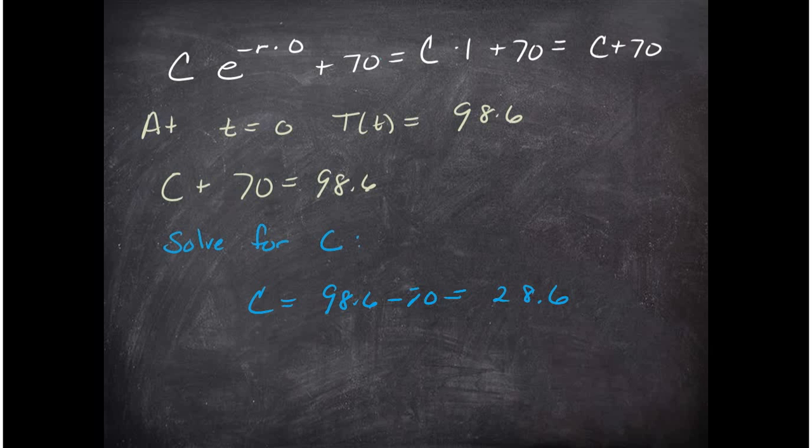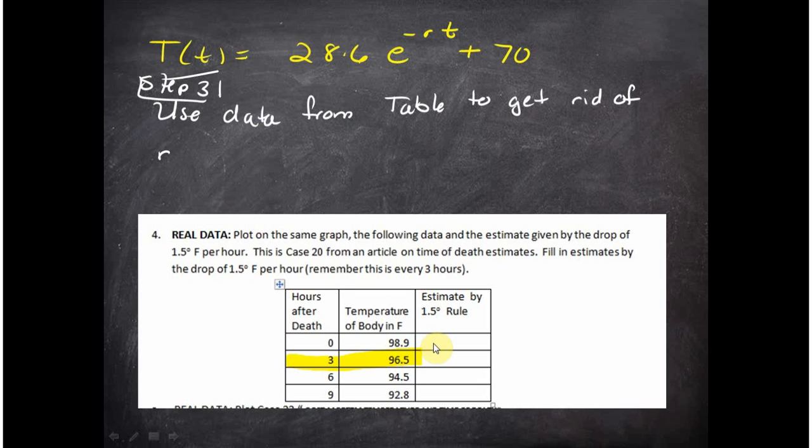And then I can solve for C and that eliminates one of the parameters. All right, so now I have only one more parameter left to dispose of and then I have a formula. And that's this r.